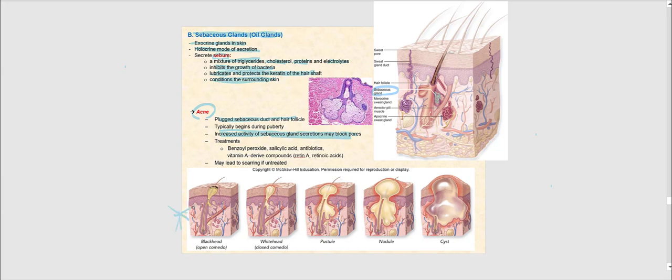Looking at the images, we have what's called a blackhead, which is basically oxidized sebum. This is an open comedo — the stratum corneum is not covering the hair follicle, so the sebum gets oxidized. When it gets oxidized, it turns black, which is why it's referred to as a blackhead.